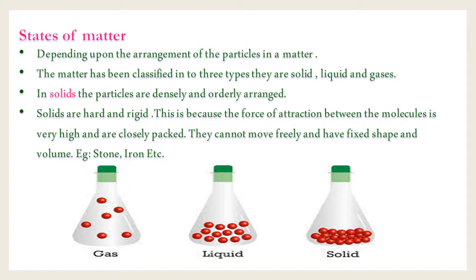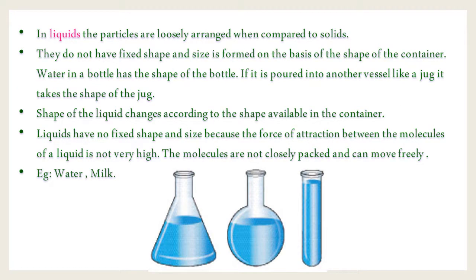In liquids, the particles are loosely arranged when compared to solids. Liquids do not have a fixed shape and size — their shape is formed based on the shape of the container. Water in a bottle has the shape of the bottle; if poured into a jug, it takes the shape of the jug. The shape of the liquid changes according to the container. Observe the images shown.